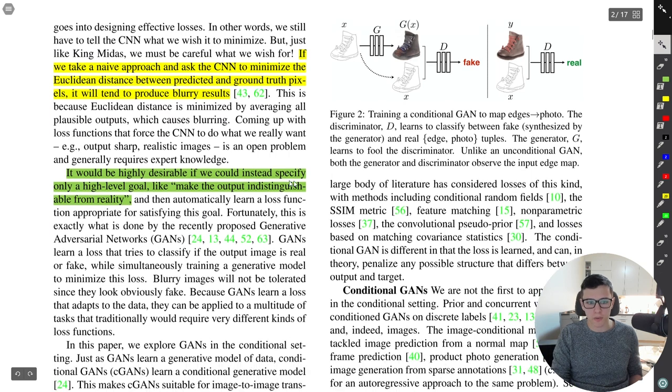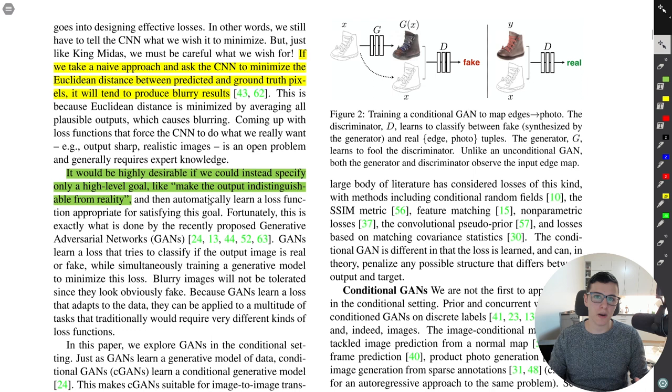So if we just take the naive approach to minimize the Euclidean distance, it will tend to produce blur results. So, you know, then you can kind of think about, you know, what do we want for our loss function? And basically, you know, it would be desirable if we could instead specify something like make the output indistinguishable from reality. And, you know, so that's a pretty funny way of framing your loss function or formulating your loss function. But in fact, you know, that's exactly what GANs do. So that is sort of, this sort of leads us to the path of using GANs instead of just using a normal loss.